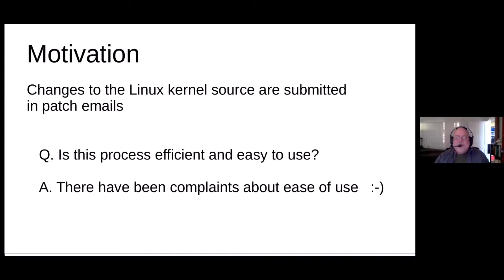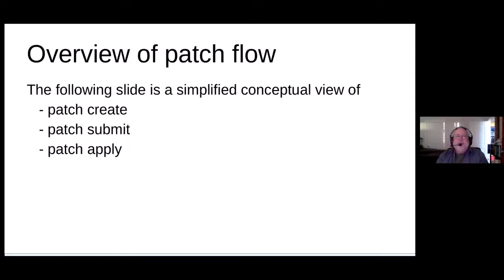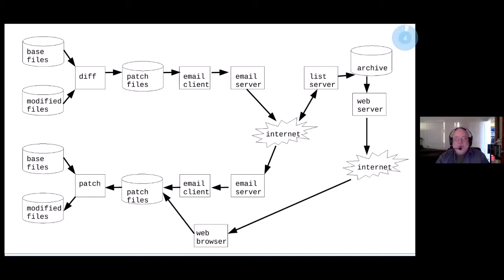Why is this talk interesting? When we send changes to the Linux kernel source, we send them via patch emails. You might ask: is this process efficient? Is it easy to use? The sarcastic answer is yes, it's efficient — but there have been many complaints over the years about ease of use. So I'm going to start with an overview of what the patch flow looks like. This is a really simplified, conceptual view — don't hold me to its total technical correctness — and it will show how patches are created, submitted, and then applied once received. We'll be seeing this picture multiple times and I'll be adding layers as we go.